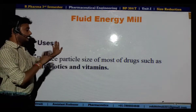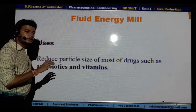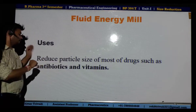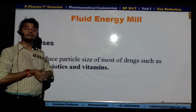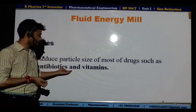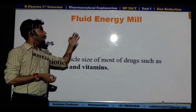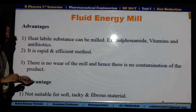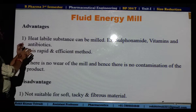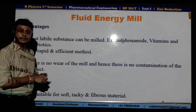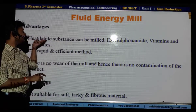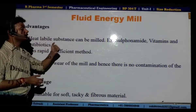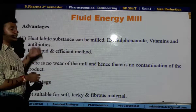The advantage of the fluid energy mill is that thermally labile materials can be processed very easily inside it. Antibiotics and vitamins are the major products processed and size-reduced in the fluid energy mill. Heat-labile or thermal-labile substances such as sulfonamides, vitamins, and antibiotics can be easily processed.